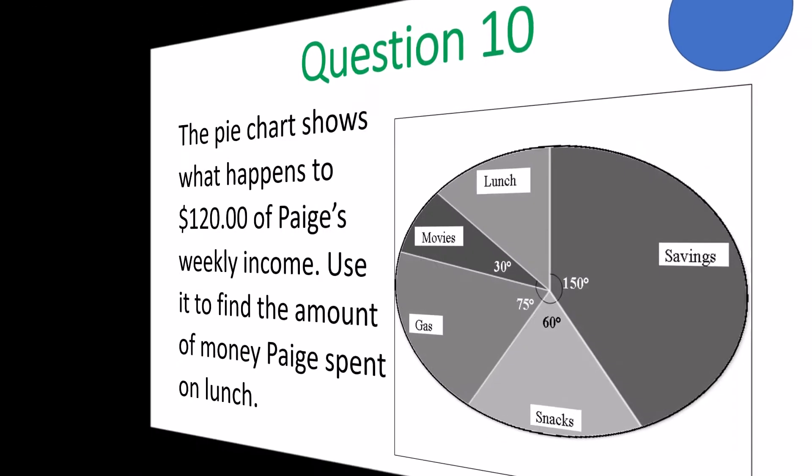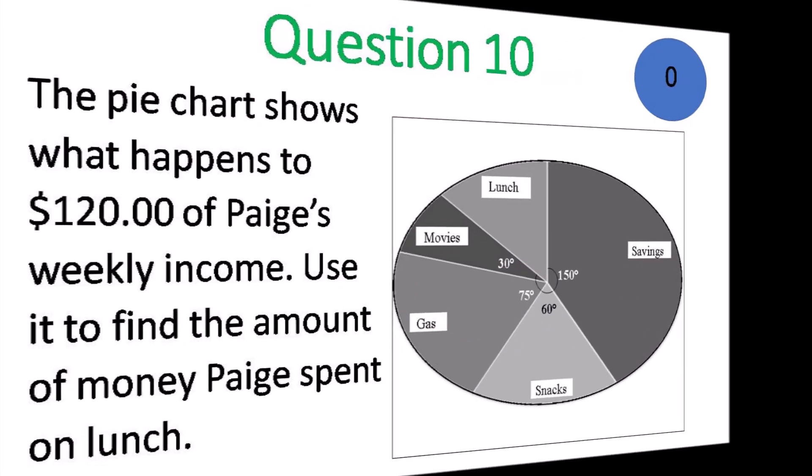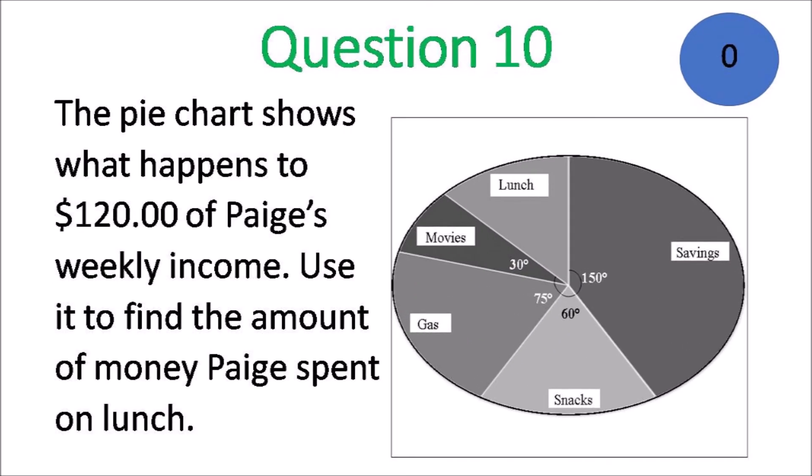The final question is question 10. The pie chart shows what happens to $120 of Paige's weekly income. Use it to find the amount of money spent on lunch.